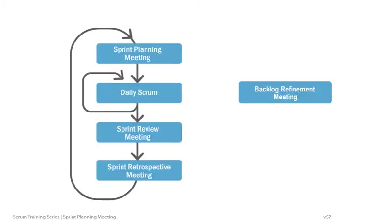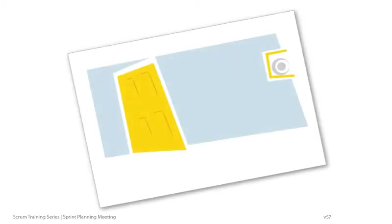As you learned in Part 2, our team has already conducted a backlog refinement meeting. Now we'll watch them plan an actual sprint. I'll quiz you during the scene. Let's sneak into the team room now. This is a serious meeting, so keep quiet.